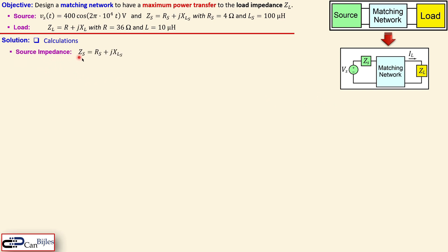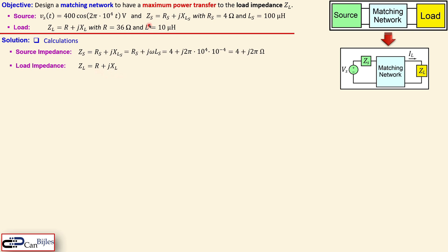The source impedance ZS is a series combination of RS and the reactance of inductor LS. The reactance is ω·LS, where ω = 2π × 10⁴ rad/s. Substituting the values with LS = 100 microhenries gives ZS = 4 + j2π ohms. For the load impedance, similarly substituting values gives ZL = 36 + j0.2π ohms.